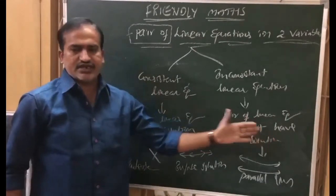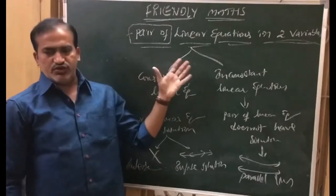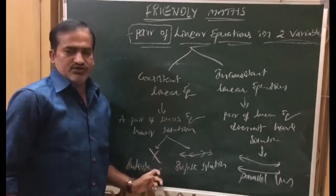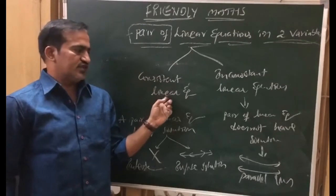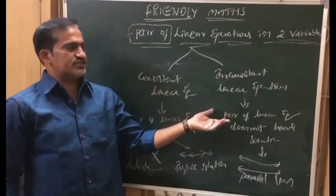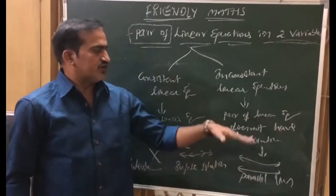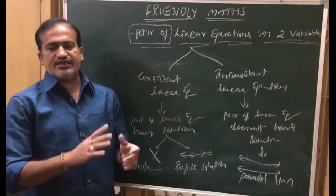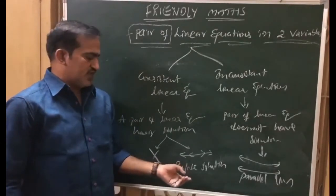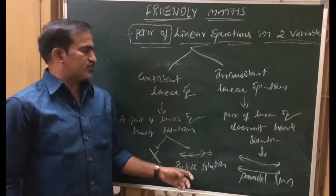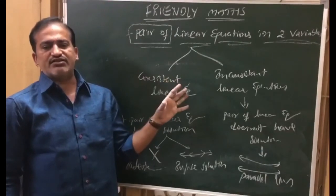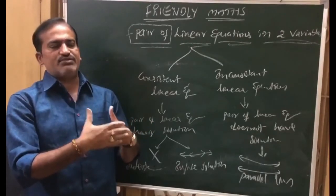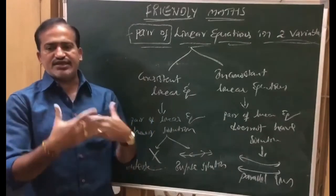To summarize: intersecting lines, parallel lines, and coincident lines can be identified by observing the coefficients. If x coefficient ratio and y coefficient ratio are both different — intersecting lines, unique solution, consistent linear equations. If x and y coefficient ratios are same but constant ratio is different — parallel lines, no solution, inconsistent linear equations. If all three ratios are equal — coincident lines, infinite solutions, and these are consistent. One important note: consistent linear equations include both intersecting and coincident types, but inconsistent has only one type — parallel lines with no solution.